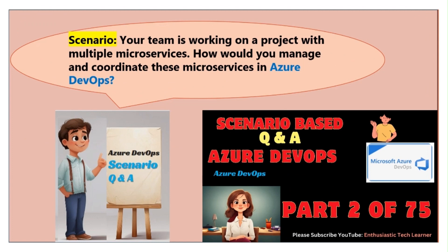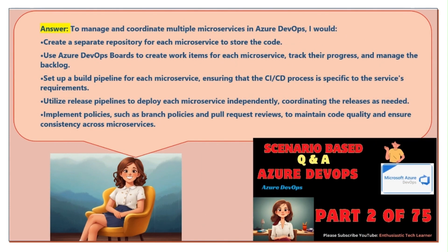Scenario two: your team is working on a project with multiple microservices. How would you manage and coordinate these microservices in Azure DevOps? To manage and coordinate multiple microservices, I would create a separate repository for each microservice to store the code. Use Azure DevOps boards to create work items for each microservice, track their progress, and manage the backlog. Set up a build pipeline for each microservice, ensuring that the CI/CD process is specific to the service's requirements.